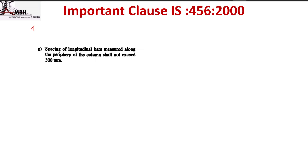The spacing of longitudinal bars measured along the periphery of the column shall not exceed 300 mm.